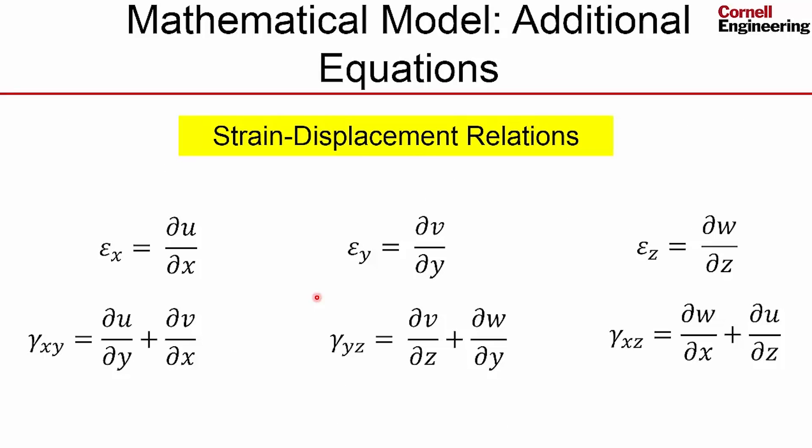And then we bring in the strain displacement relations. The three normal strains and the three shear strains. And that's the same as what we have for the bike crank case. So the assumption embedded in here is that we have small displacements and small strains.